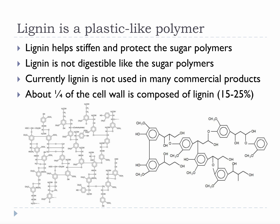Lignin is a plastic-like polymer, very different than the previous two sugar polymers, but not so different from polystyrene that styrofoam is made of, or certain polyesters like the ones used for plastic bottles. Lignin does not degrade easily. It helps stiffen and protect the sugar polymers, and it is not digestible like the sugar polymers. It is really not used in too many commercial products right now, and like hemicellulose, about a quarter of the cell wall is composed of lignin. Please take a moment and look at the chemical structures — notice how many of these are double circles. Those double circles mean they are aromatic molecules. As a rule, aromatic molecules are very difficult to digest. Interesting for the bioenergy field, gasoline is heavily composed of aromatics also.